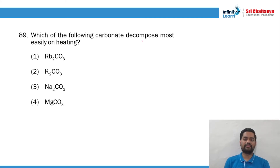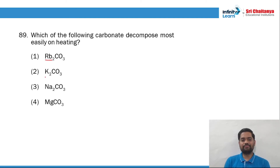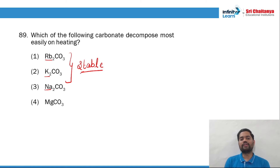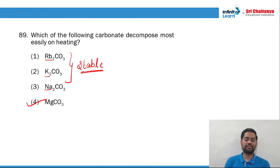Question 89: which of the following carbonates decomposes most easily on heating? Rubidium, potassium, and sodium all belong to alkali metals, and alkali metal carbonates are stable on heating apart from lithium carbonate. Alkaline earth metal carbonates decompose readily. So question 89, option number 4 is the right answer.